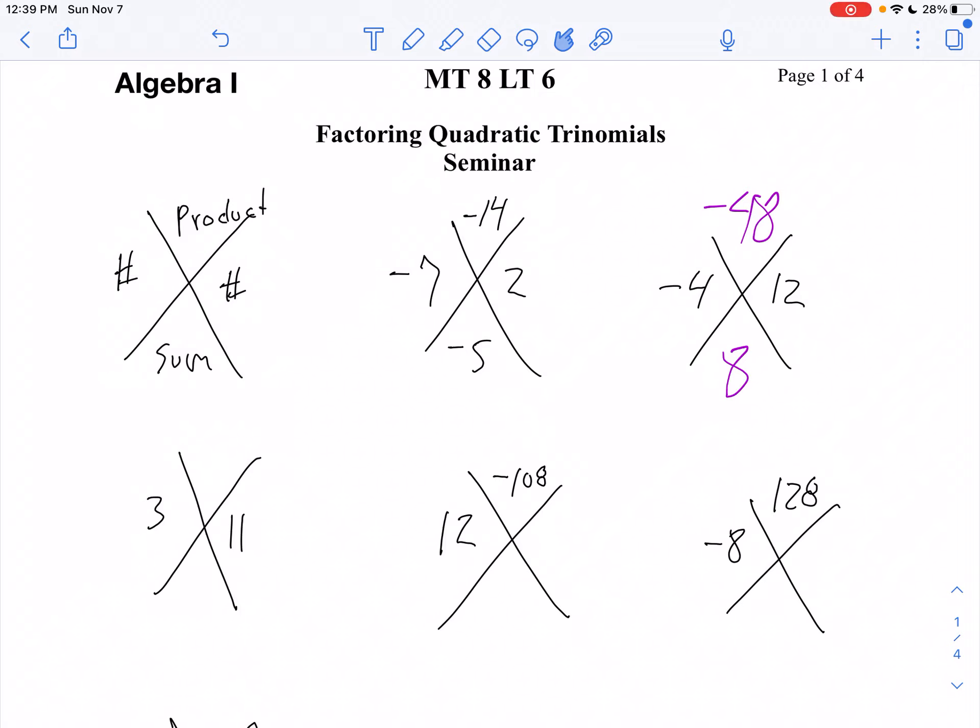In our first problem, in the second row, we've got 11 and 3. So 11 times 3, well, that's 33. And 11 plus 3, that's positive 14.